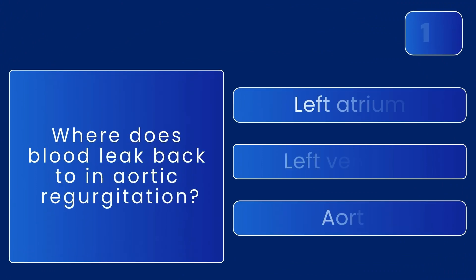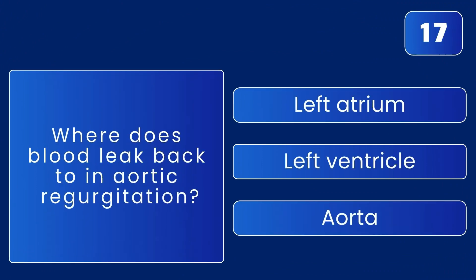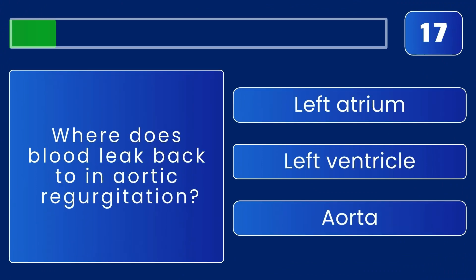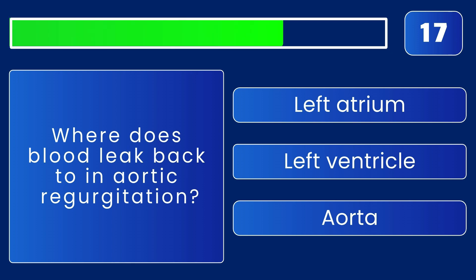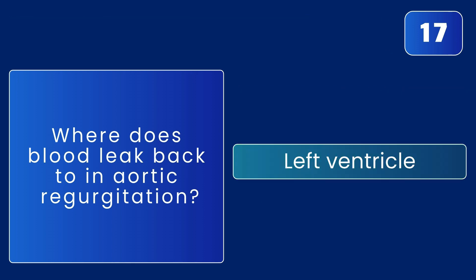Where does blood leak back to in aortic regurgitation? The answer is the left ventricle — the aortic valve doesn't close properly.